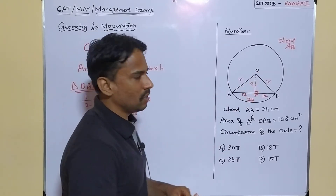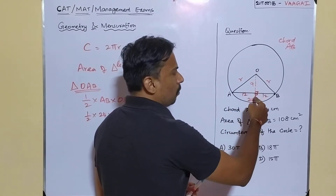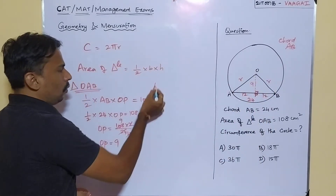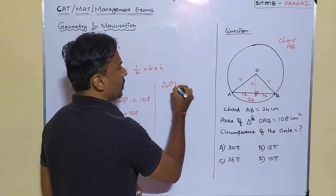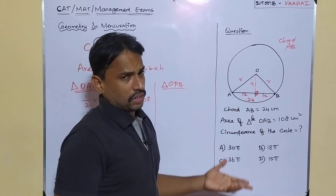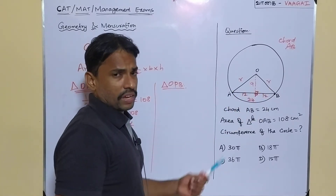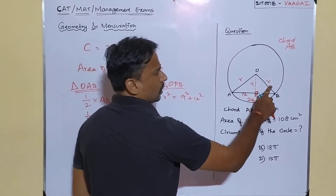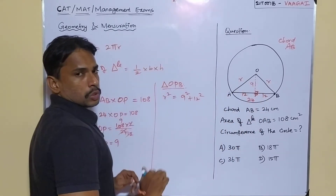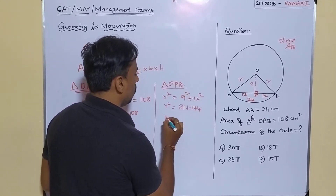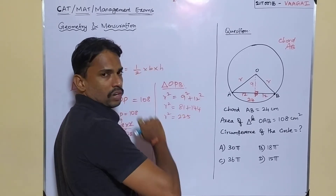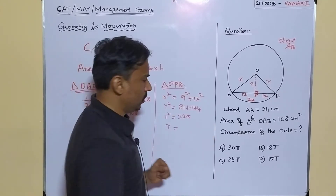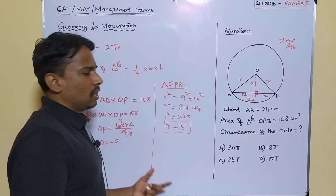Dropping the height creates two right-angle triangles. Taking right triangle OPB, the hypotenuse is OB = r, and the two legs are OP = 9 and PB = 12. Applying the Pythagorean theorem: r² = 9² + 12² = 81 + 144 = 225. Therefore r = √225 = 15 centimeters.